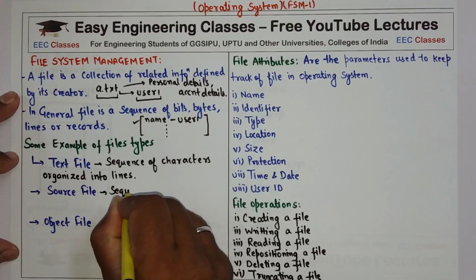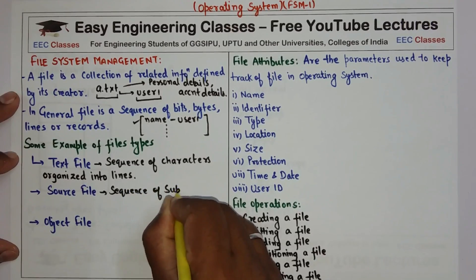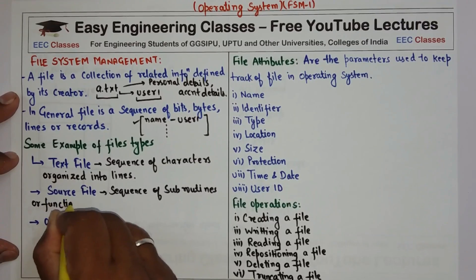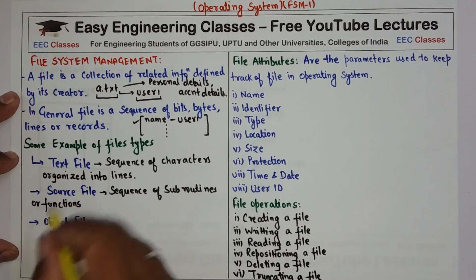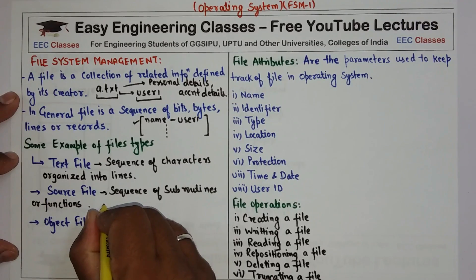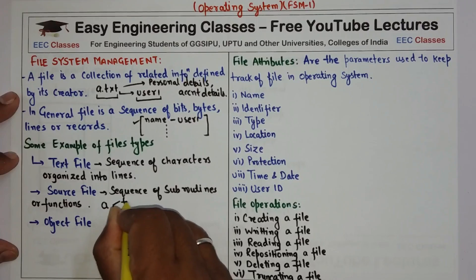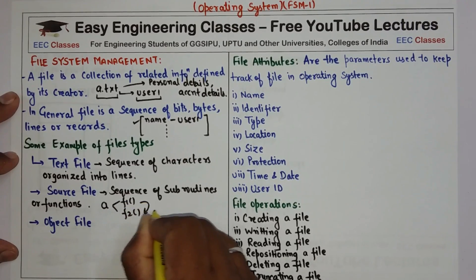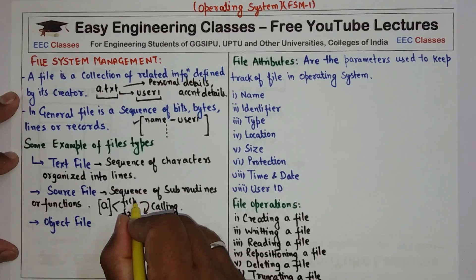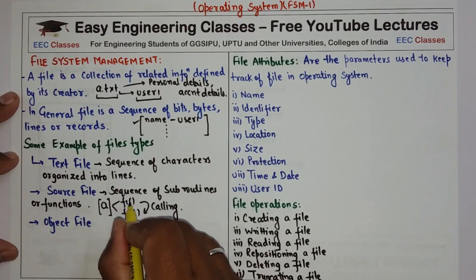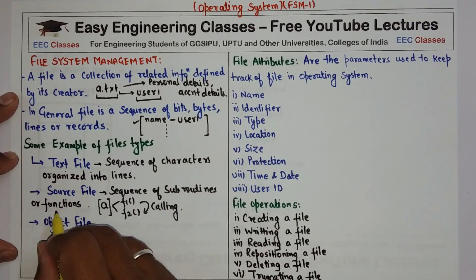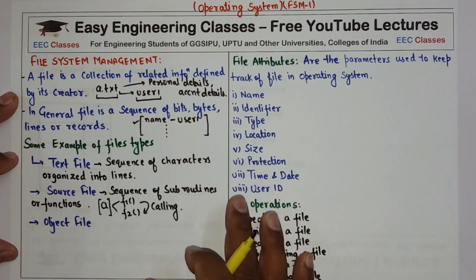A source file is a sequence of subroutines or functions which are executable and are defined to perform a specific task. For example, if I have a source file 'a' containing two functions f1 and f2, where f1 calls function f2 — when this executable file is opened, f1 runs and at some point calls f2. So a source file contains sequences of executable subroutines or functions designed to do specific tasks.